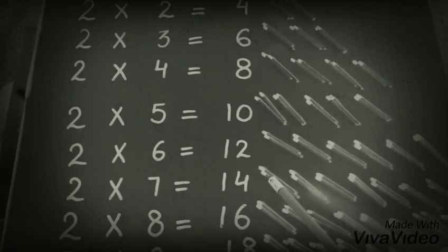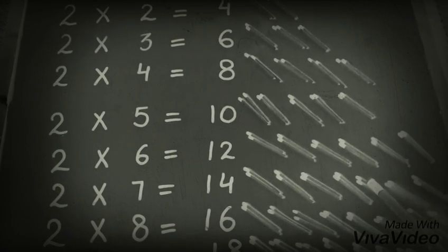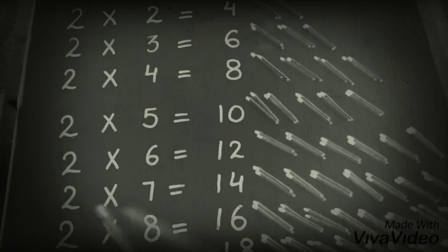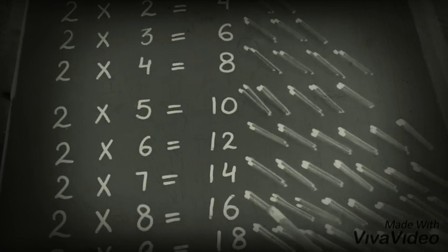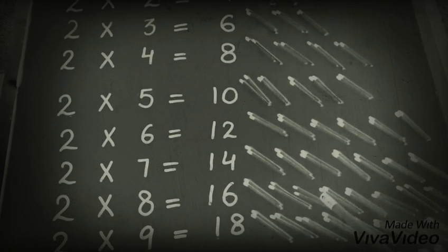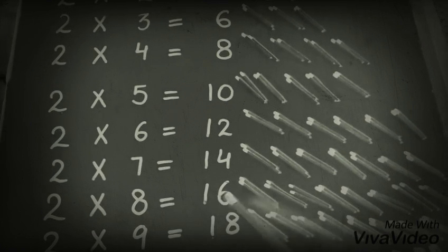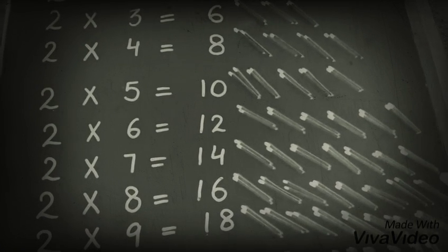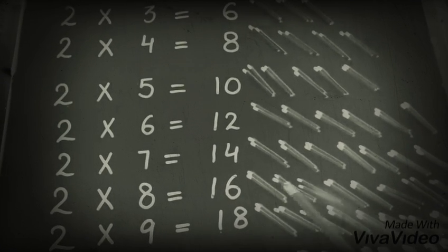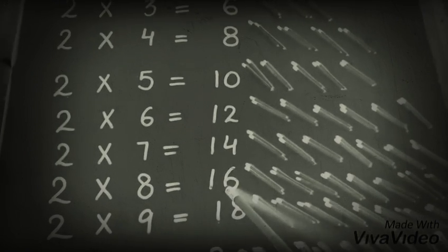Now, same like this, when you will take two objects seven times, you will get total number fourteen. So we can say two sevens are fourteen. Next, when you will take two eight times, it will become sixteen. You will count these all and you will get two eights are sixteen.